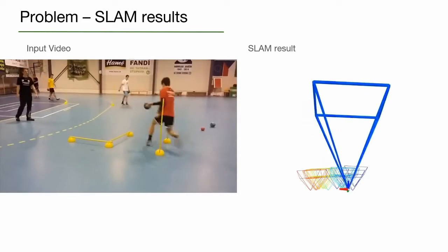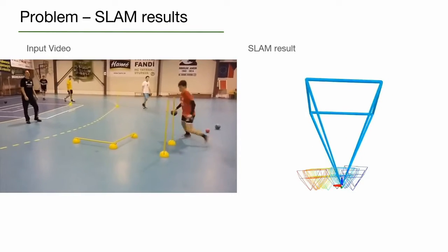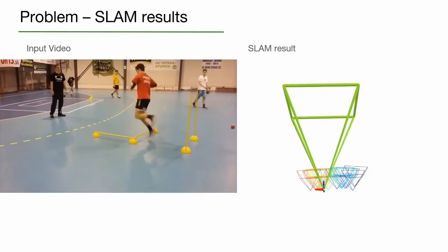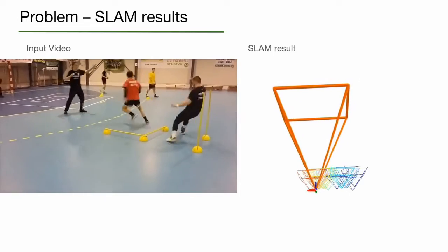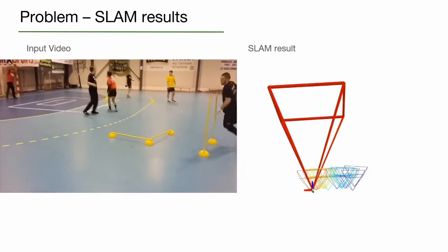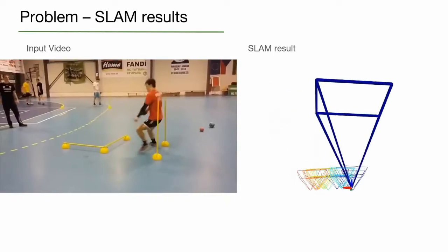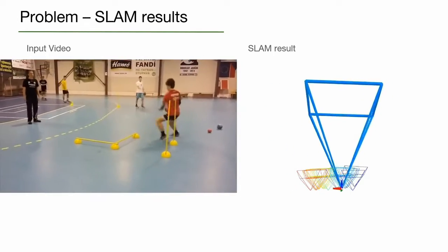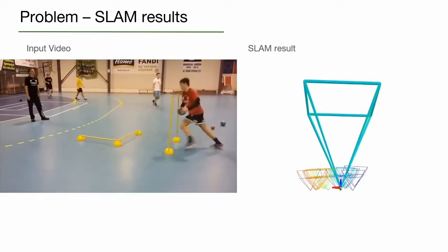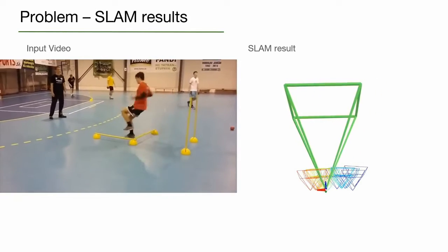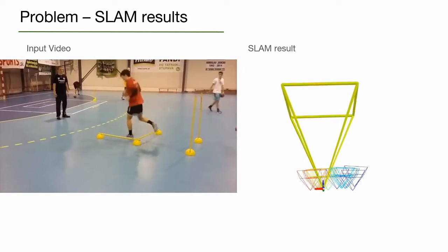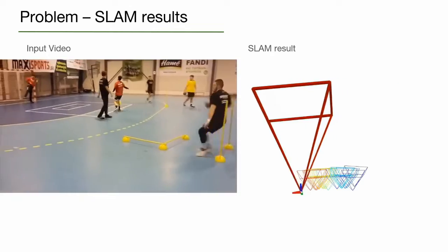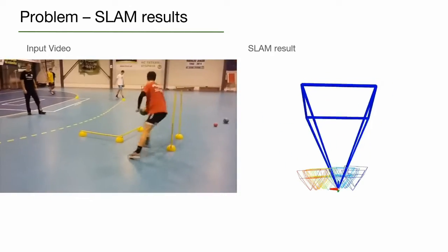Others utilize SLAM methods to estimate camera poses, then keep the camera poses fixed and estimate the global scale. However, in-the-wild videos often contain moving objects which can degrade the camera pose localization and subsequently affect the human motion estimates.